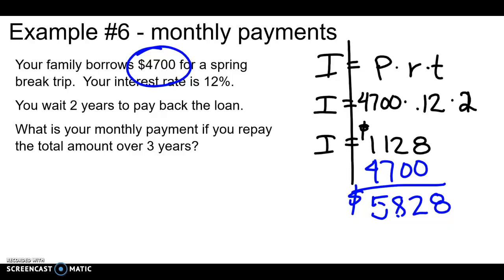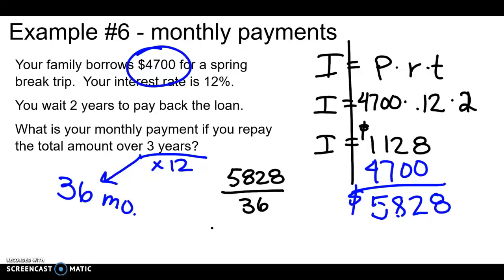But they ask your monthly payment. So if you split that up and pay it back every month, a little bit every month, over three years, how much would it be each month? Well, again, we just saw it in the previous problem. Three years. I need to multiply that by 12 months to figure out a total number of months. So I want to take that total and split it up over 36 months. So the $5,828 divided by 36 months comes to $161.88. So you'd have to pay $161.88 every month for 36 months in a row to pay off that spring break trip.